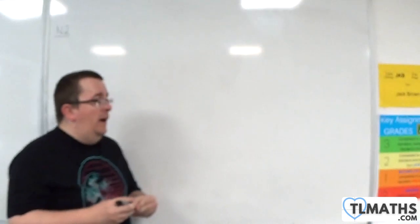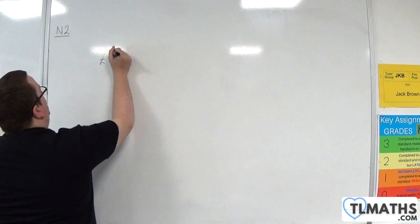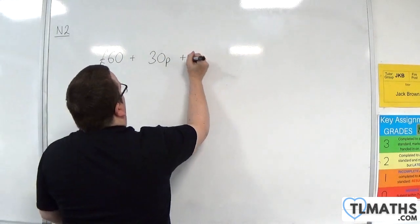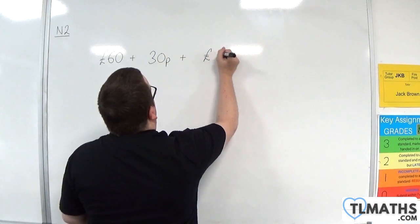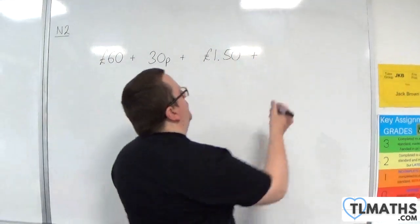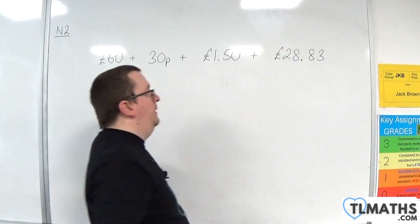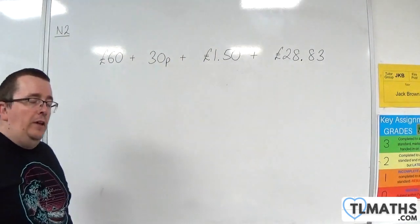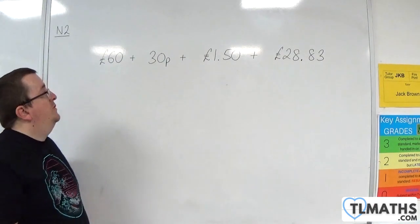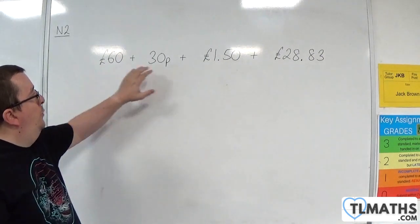For example, you were asked to add up a load of amounts of money. So let's say we had £60, and we also had £0.30, and we also had £1.50, and we also had £28.83. It's making sure that you understand the notation — so for £1 sterling and also pence.